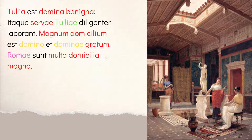Then: magnum domicilium domino et dominae gratum est. The big house is gratum — pleasing. Gratum describes domicilium, as you can tell by the UM ending. Gratum is one of those special adjectives that takes a dative, because something is pleasing to someone — so domino et dominae are our two dative nouns: it's pleasing to the master and the mistress. Then: Romae sunt multa domicilia magna. In Rome there are many big houses. When we go plural, domicilium becomes domicilia, and the adjectives change from magnum to magna, and from multam to multa — matching neuter nominative plural.